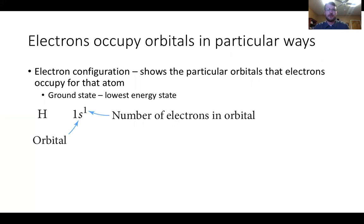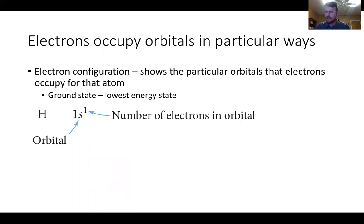To start off, we talked last time that electrons occupy orbitals in particular ways. This is known as an electron configuration, which shows the particular orbitals and the electrons that occupy those orbitals for that atom. One thing we have to think about is that for any atom there is something known as the ground state — the lowest energy state. This is the state all elements want to be in, with their full assortment of electrons at very low energy.